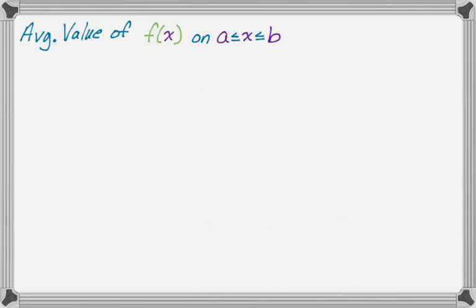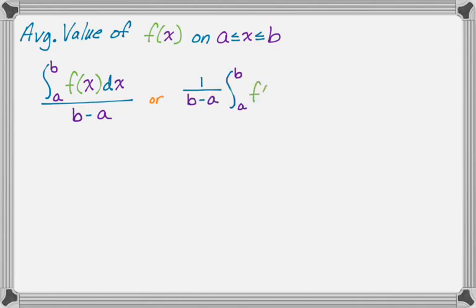The average value of f(x) on the interval from a to b has two different common ways of writing it. It's the integral from a to b of f(x)dx over b minus a, or equivalently - in fact on the AP exam they write it this way all the time - as 1/(b-a) times the integral from a to b of f(x)dx.